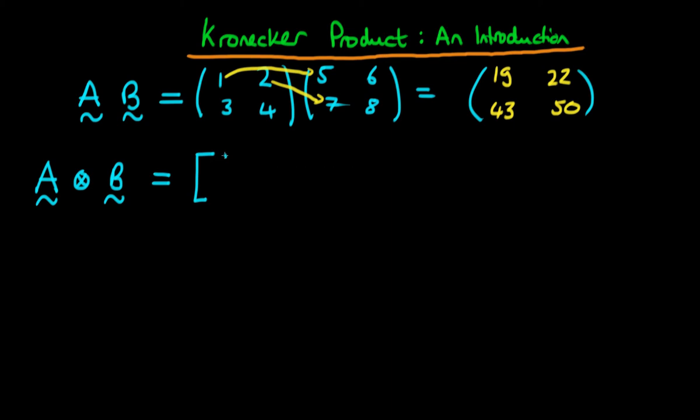So the idea here is, let's say we have a 2 by 2 matrix A which is A11, A12, A21 and A22, and we're taking the Kronecker product of that matrix with a matrix B which is defined as B11, B12, B21 and B22.